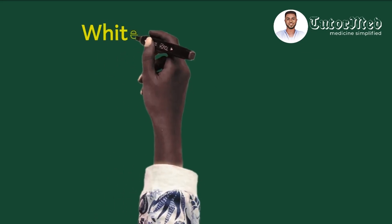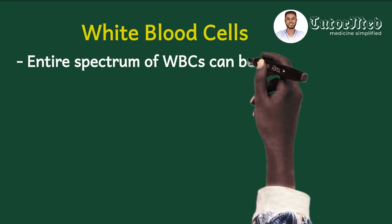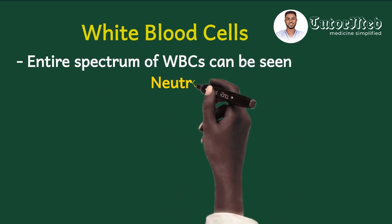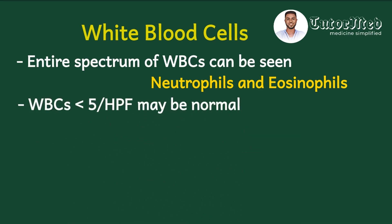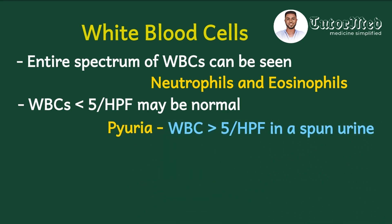The next type of cell to look at is white blood cells. We have different types — neutrophils, eosinophils, lymphocytes, macrophages — the entire spectrum can be seen on urine microscopy, however neutrophils and eosinophils are the most clinically significant. White blood cells fewer than five per high power field may be normal. More than five white blood cells per high power field on microscopy in centrifuged urine constitutes pyuria, and if the urine culture comes back negative, this gives you sterile pyuria.